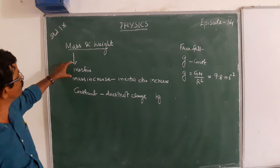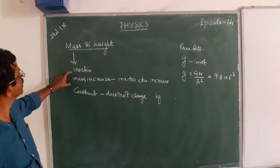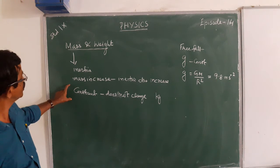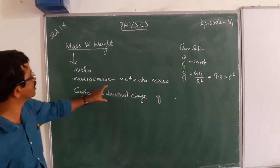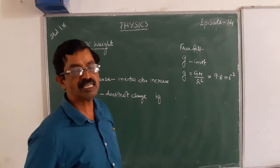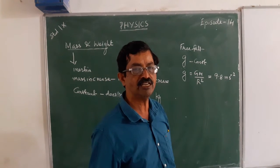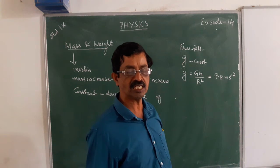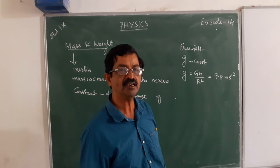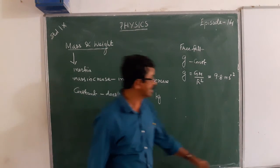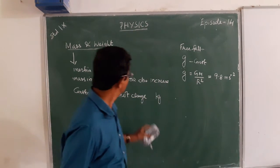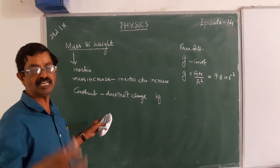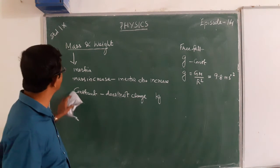Mass is a measure of inertia. When mass increases, inertia also increases. This mass is constant and does not change — it remains the same everywhere in the universe. Mass is the quantity of matter in a body, and that is what we measure in terms of mass.